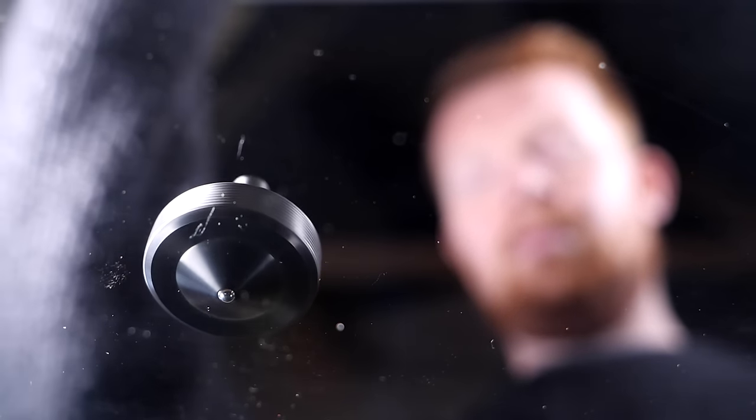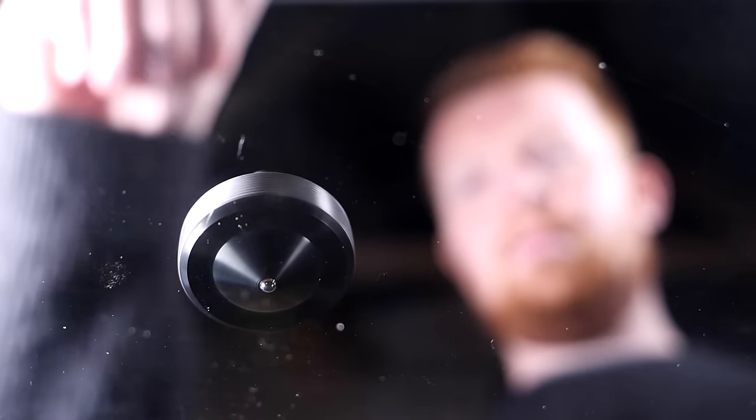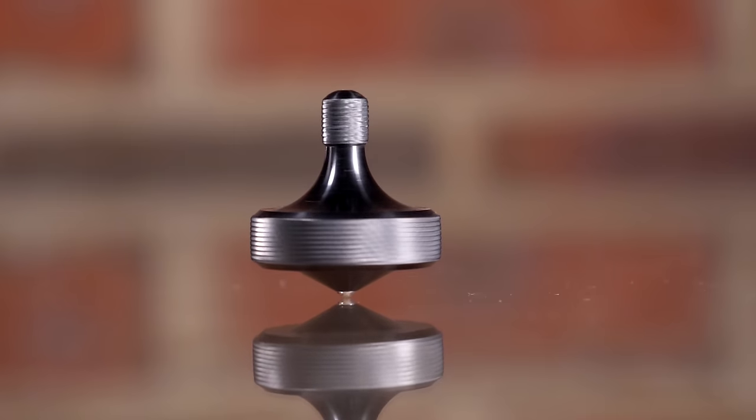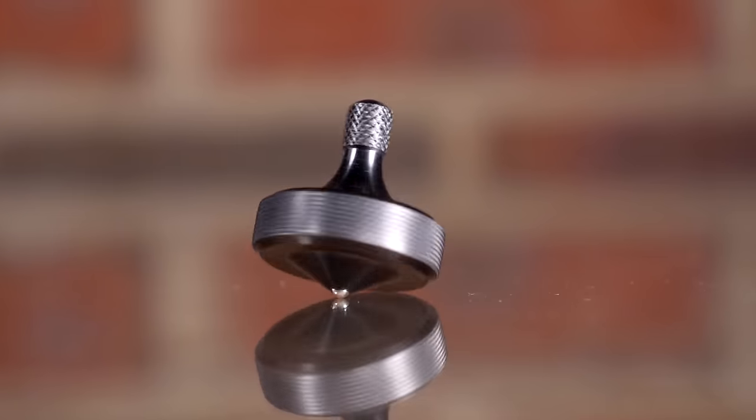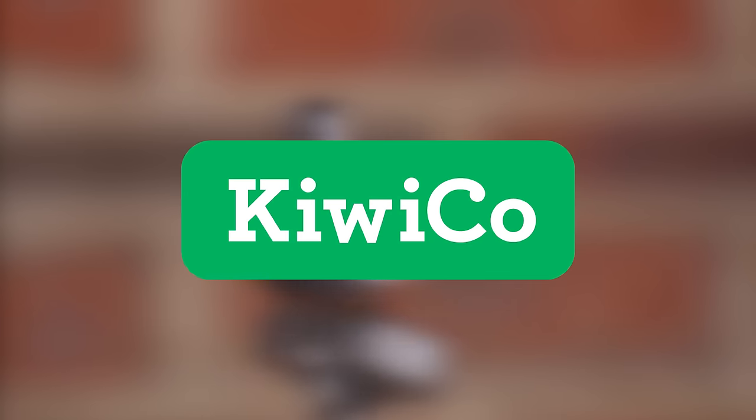When you spin a spinning top, you give it kinetic energy, which is slowly lost to air resistance and friction. But what if you could also give it another form of energy to help it spin longer? This video is sponsored by KiwiCo. More on them later.